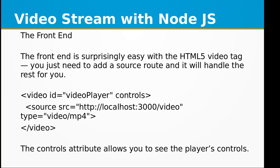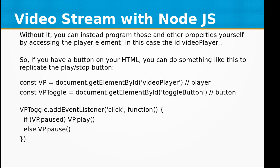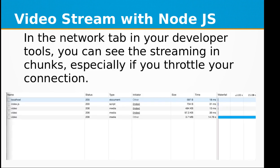Let's look at the front end. The front end is surprisingly easy — with the HTML5 video tag you just need to add a source route and it will handle the rest for you. The controls attribute allows you to see the player's controls; without it you can program those properties yourself by accessing the player element, in this case by ID 'videoPlayer'. If you have a button on your HTML, you can add an event listener to that button's click event and pause or unpause the video.